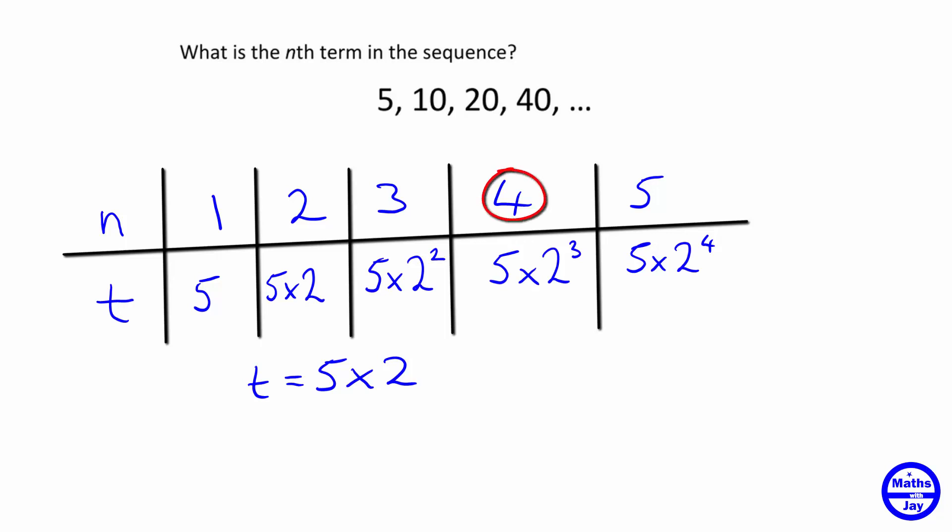So when we were on the fourth term, we were multiplying by 2 to the power of 3. When we were on the third term, we were multiplying by 2 to the power of 2. So what we want here, instead of n, we want n minus 1.